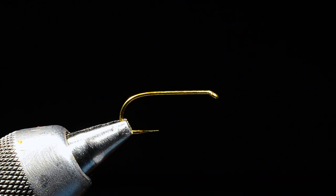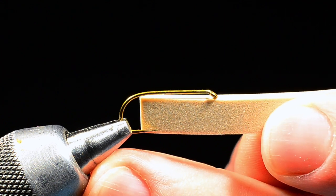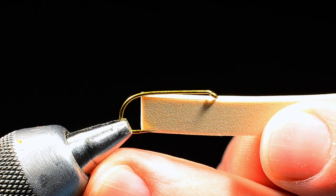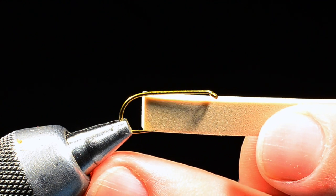And what we're going to start with is a Tiemco 100 SPBL, size 8 or 10. They don't make the 8 anymore, so I tie a lot of size 10s. And I've got a strip of 2mm fly foam in tan. Tan is my favorite color to fish these in, but of course you can tie them tan, olive, yellow, black. Black is actually a pretty good one.